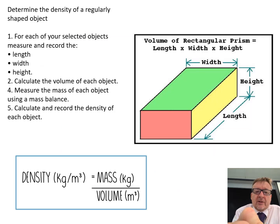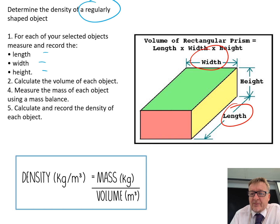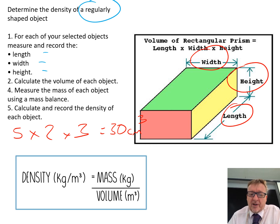This one we're going to look at is a regularly shaped object, so you're just talking like a block. For each of your selected objects, measure the length, the width, and the height. Literally what you'll do then is if the length is five centimetres, the height is two centimetres, and the width is three centimetres, you multiply them together. Five times two is ten, times three is thirty. If it's in centimetres, it becomes centimetre cubed. That is then working out the volume.